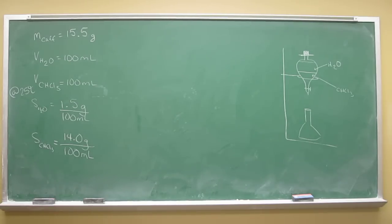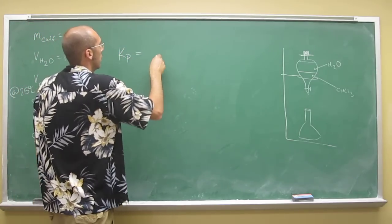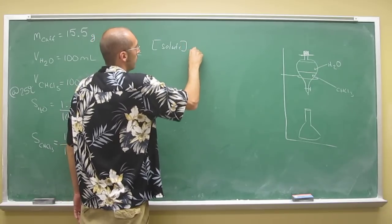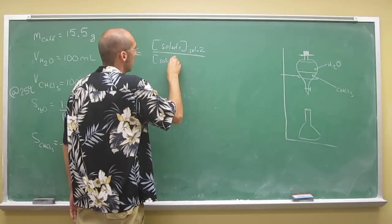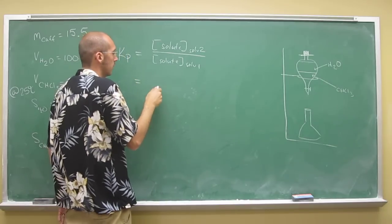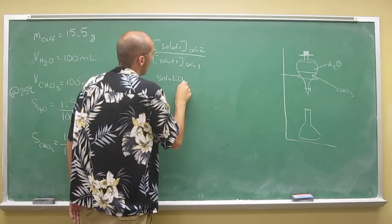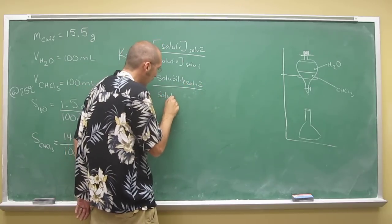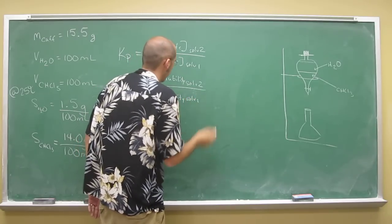What do we know about the partition coefficient? We know Kp equals the concentration of the solute in solvent two divided by the concentration of the solute in solvent one. But we also know it equals the solubility of the solute in solvent two divided by the solubility in solvent one.